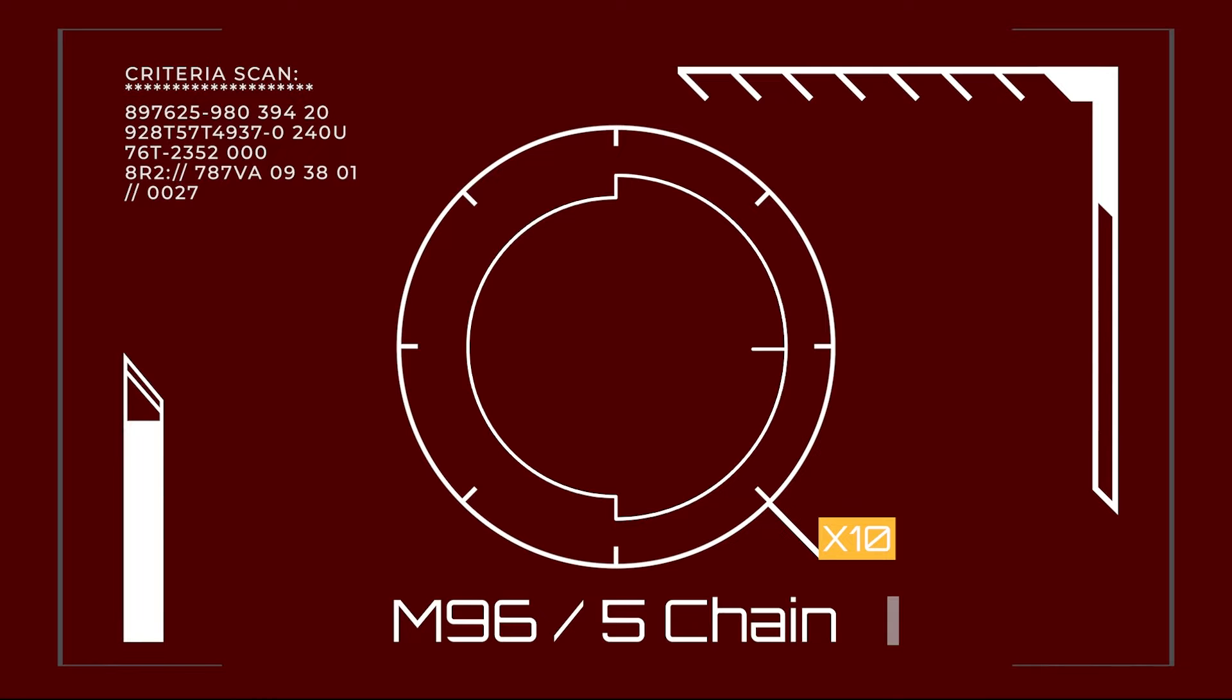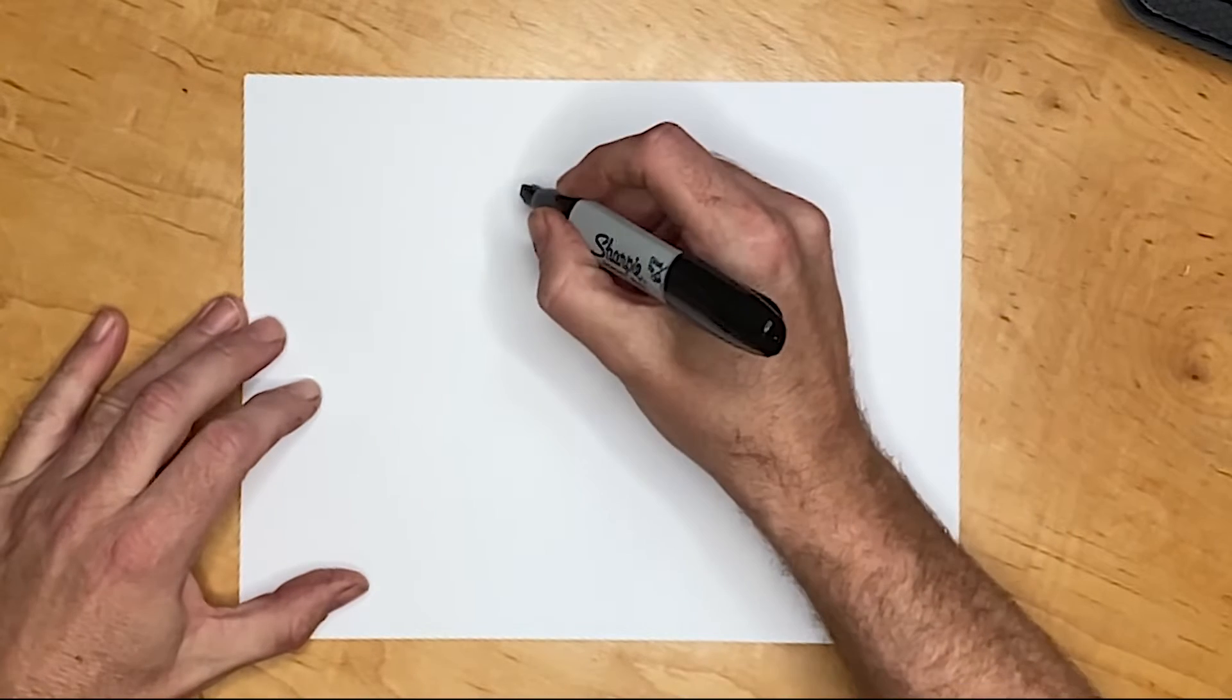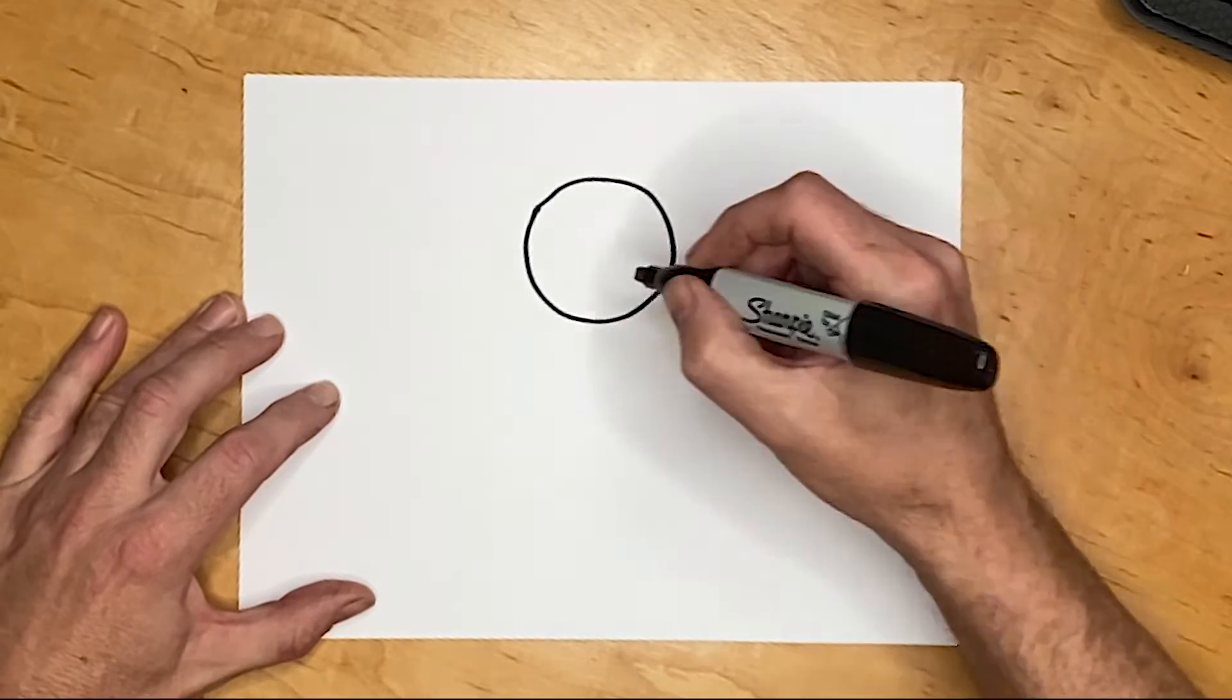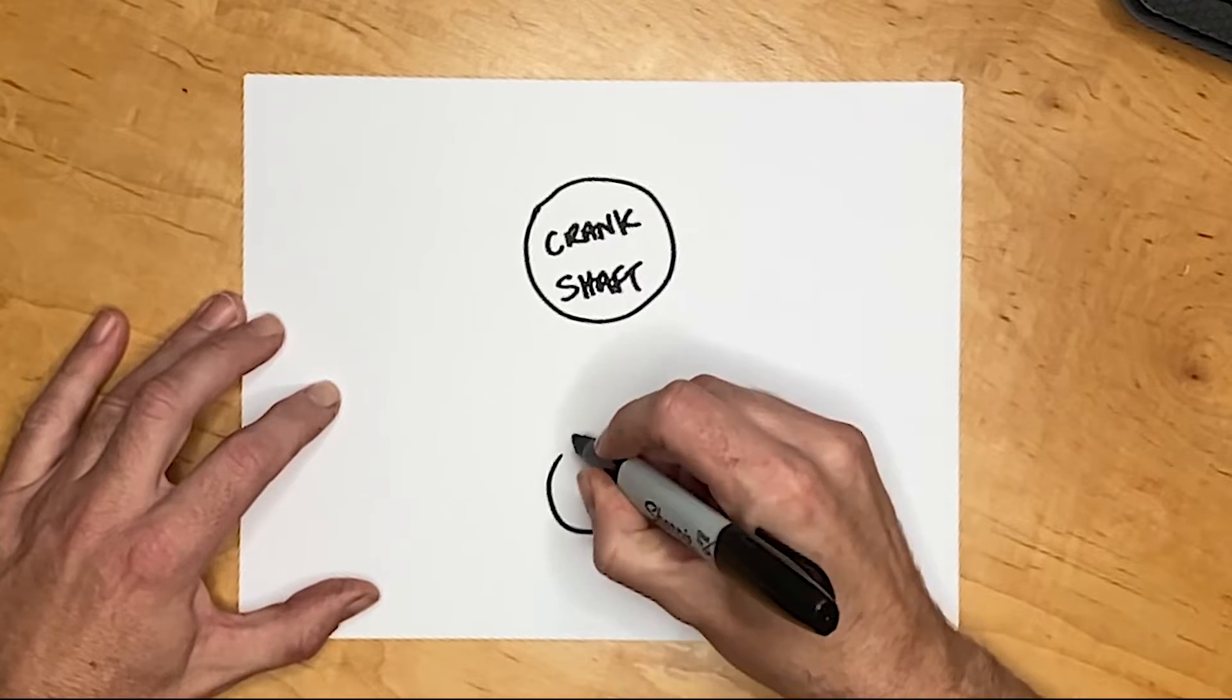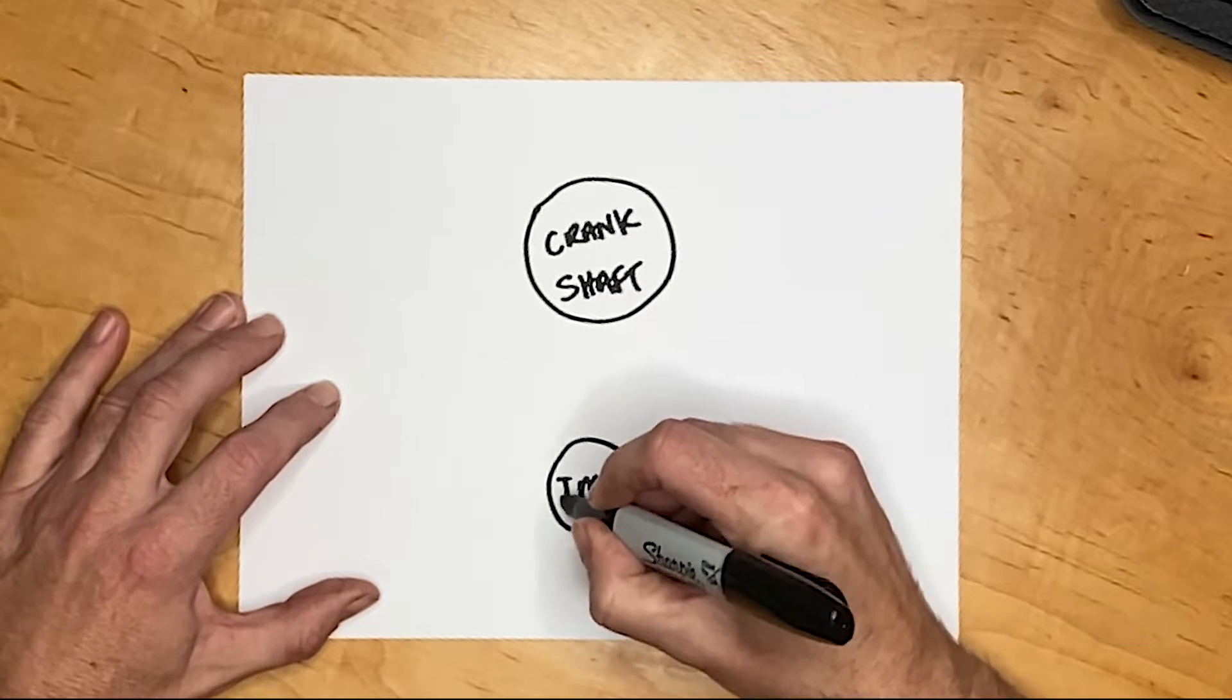In the center we have the crankshaft, the main part of the engine. The point of its existence is to turn the crankshaft. The power from that, some of the power, goes off to the intermediate shaft.